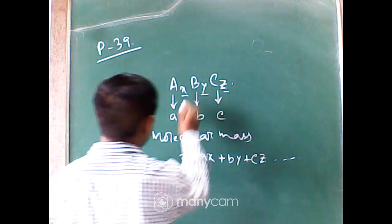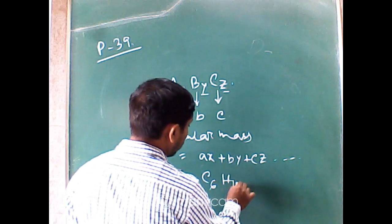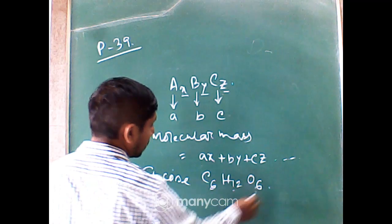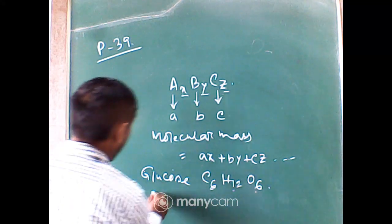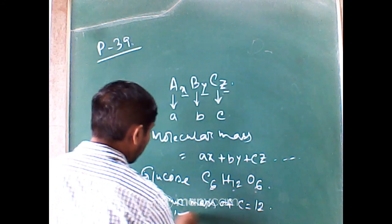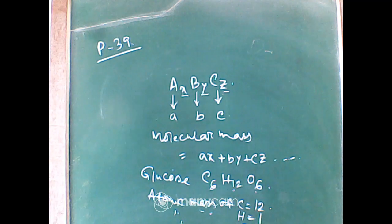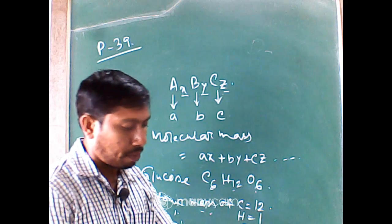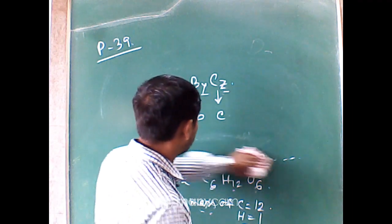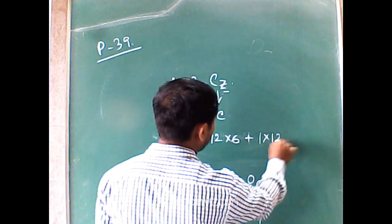Now let's take an example. I am taking glucose, which has the formula C₆H₁₂O₆. Here x means 6, y means 12, and z means 6. We have to know the atomic masses of the constituent elements: atomic mass of carbon equals 12, atomic mass of hydrogen equals 1, and atomic mass of oxygen equals 16. Now just put these values into that formula to calculate the molecular mass of the glucose molecule.